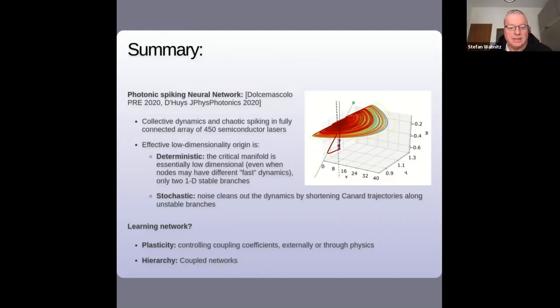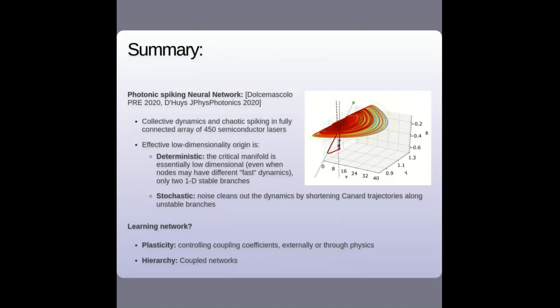Thank you very much Stefan for your extremely interesting presentation. We have more than 10 minutes for questions. There is a question from Stanlaw: 'I was expecting that by increasing the perturbation parameter we should see more bifurcations, as chaotic systems in general do. Do you know why we don't see more bifurcations?' Basically, what happens is there is no multi-stability in this model. The system can be on a rest point here or there, or periodically switching, or chaotically spiking — but there is just one attractor in each parameter region.